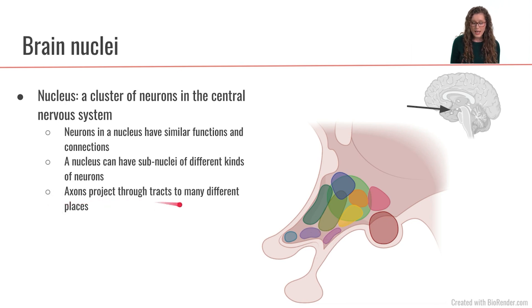And again as I mentioned here, axons that project from a nucleus, they will frequently go through highways to different places. So the axons from this nucleus can travel to another nucleus within the hypothalamus or to another nucleus that is in a very far region in the brain. So those are brain nuclei.